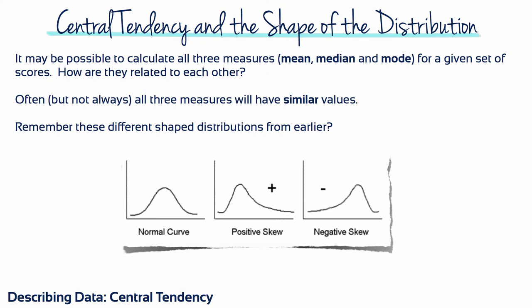Specifically, there are situations in which all three measures will have exactly the same value. On the other hand, there are situations in which the three measures are guaranteed to be different. In part, the relationships among the mean, median and mode are determined by the shape of the distribution. We'll consider two general types of distribution.